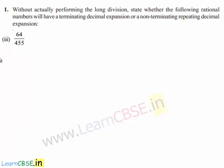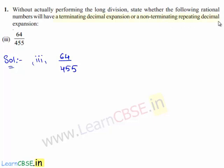Now let us move on to the third bit given in the question. Here we need to find whether the given rational number 64 upon 455 has a terminating decimal expansion or a non-terminating repeating decimal expansion. To find whether the decimal expansion is terminating or non-terminating repeating, we shall first write the given denominator as a product of its prime factors.